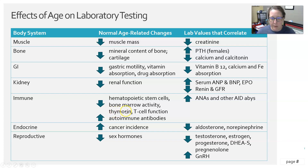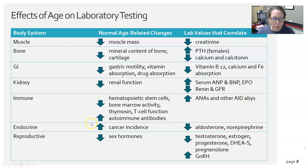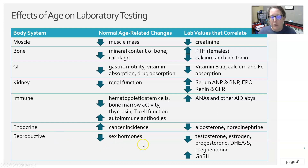There is also a decrease in thymosins due to thymus shrinking and a decrease in T cell function, making it harder to fight off infections. There is an increase in autoimmune antibodies, which may be reflected by elevated ANAs and other autoimmune disease antibody markers. In the endocrine system, there is an increase in cancer incidence, a decrease in aldosterone, and a decrease in norepinephrine. Sex hormones are decreased — testosterone, estrogen, progesterone, DHEAS, and pregnenolone — with a compensatory increase in gonadotropin-releasing hormone.